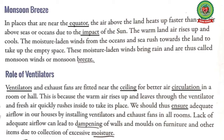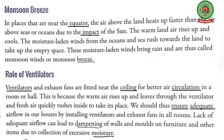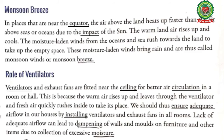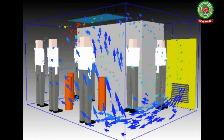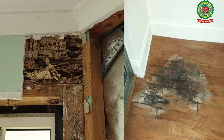Underline the word 'ensure' and write its meaning: to make sure of something. Now underline 'adequate' and write its meaning: sufficient. Now underline 'installing' and write its meaning: to set up or put in place. So ventilators make sure of sufficient airflow in the rooms, and lack of adequate airflow can lead to damping of walls and molds on furniture and other items due to collection of excessive moisture.